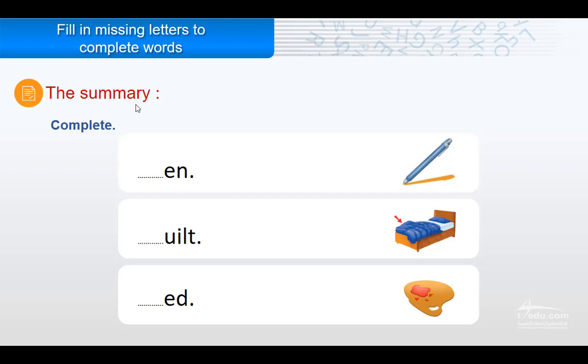Now the summary. Complete the missing letters. What should I start here? What should I write? What is this? It is a pen. P, Pen. And so on.